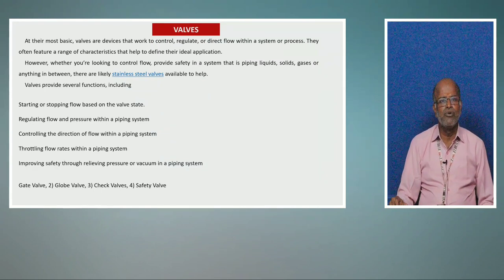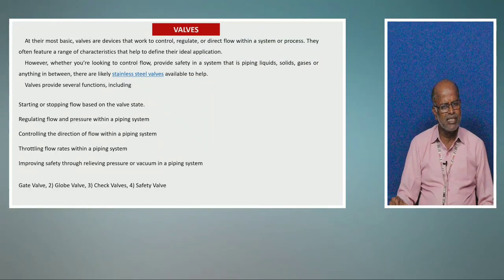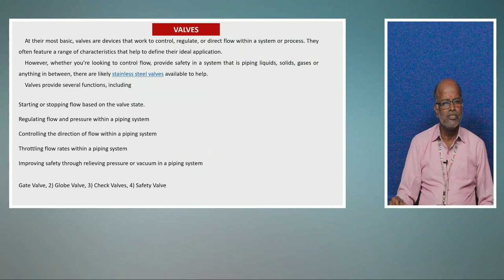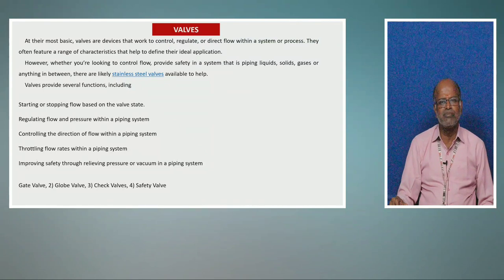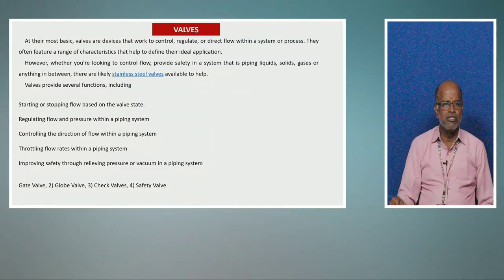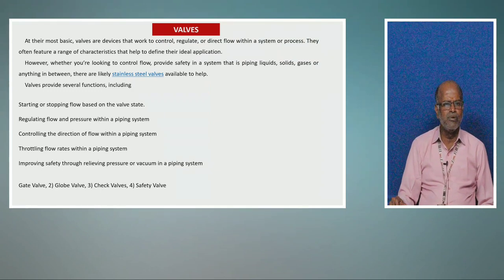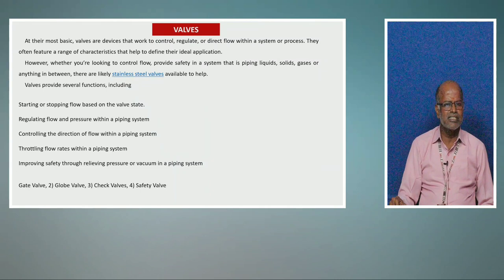The functions of a valve include: starting or stopping flow based on the valve state, regulating flow and pressure within the piping system, controlling the direction of flow, throttling the flow rate, and improving safety. For example, a safety valve is present even in a pressure cooker to maintain pressure safety.